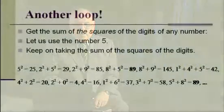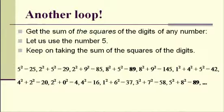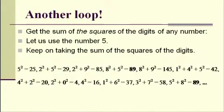Here's another loop: take the sum of the squares of the digits of any number. Start with 5: 5 squared is 25. Sum of squares of digits of 25: 2 squared plus 5 squared is 29. Sum of squares of digits of 29: 2 squared plus 9 squared is 85. Continue and you'll eventually reach 89. Once you hit 89, you will always end up back at 89 — you're in a loop. We chose 89 because it's a manageable number.